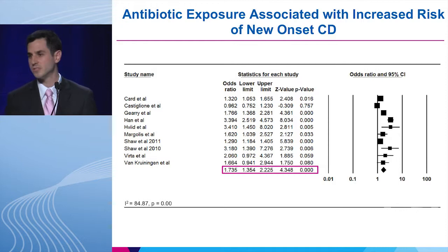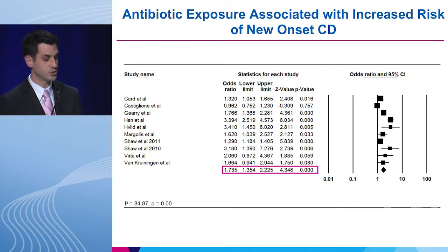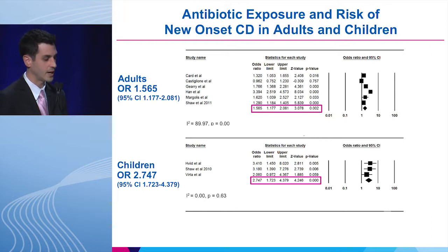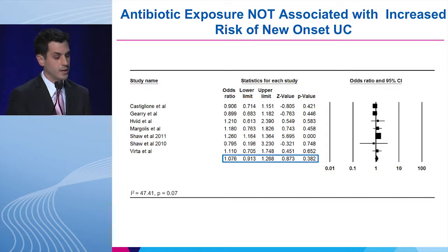Looking at Crohn's disease specifically, antibiotic exposure was significantly associated with new onset Crohn's disease, with an odds ratio of 1.73. When stratified by age, children were significantly more at risk for developing Crohn's disease, with an odds ratio of 2.7, whereas adults had an odds ratio of 1.6.